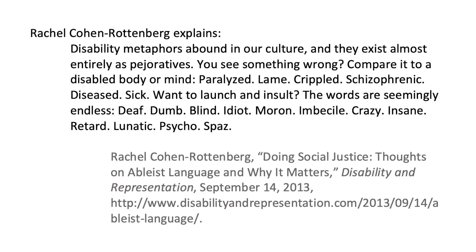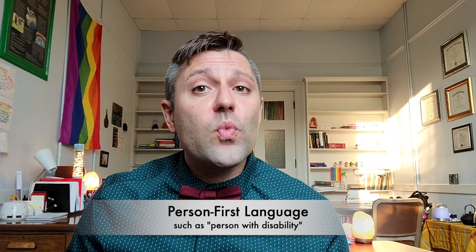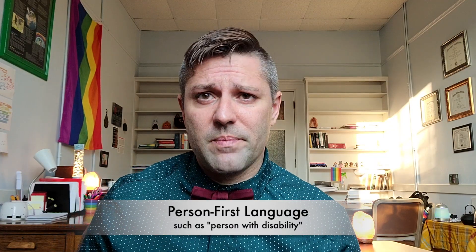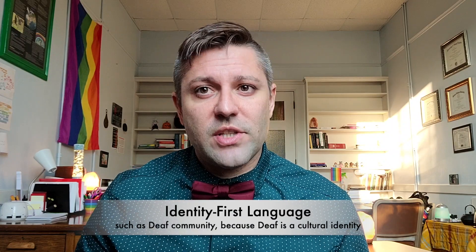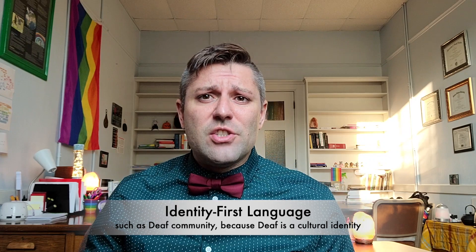Let's talk about disability in language. Rachel Cohen-Rottenberg explains that disability metaphors abound in our culture and they exist almost entirely as pejoratives. You see something wrong — compare it to a disabled body or mind: paralyzed, lame, crippled, schizophrenic, diseased, sick. Want to launch an insult? The words are seemingly endless: deaf, dumb, blind, idiot, moron, imbecile, crazy, insane, retard, lunatic, psycho, spaz — words to avoid when that's not exactly what you mean. There are two ways of describing people with disabilities that are context-specific: person-first language, such as 'persons with disabilities,' and identity-first language, such as 'Deaf people' — that's Deaf with a capital D.